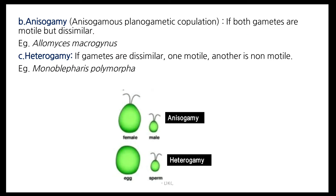Second is anisogamy. Here two cells are involved but both have the same shape; however, their size is different and both are motile. This is present in Allomyces.